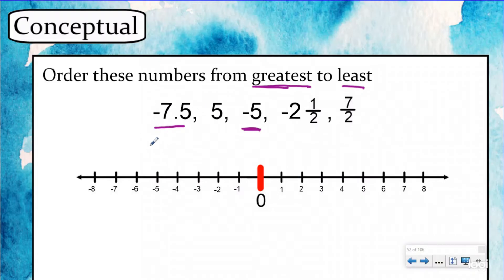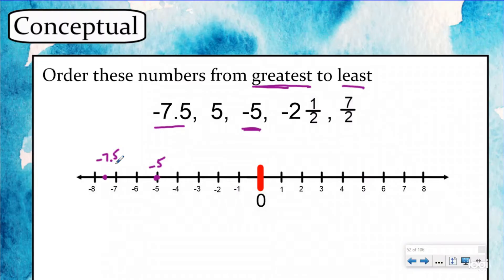If you have seven dollars and fifty cents you have more money than someone with five dollars, and our brain is so used to thinking in positives. So it's good to label them on the number line. If you put negative seven and five tenths on the number line it's further left than negative five, which means it is smaller. A real-world example: if I owe someone seven dollars fifty and you owe them five dollars, I owe more — meaning I have less money.